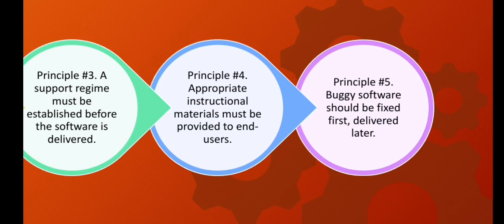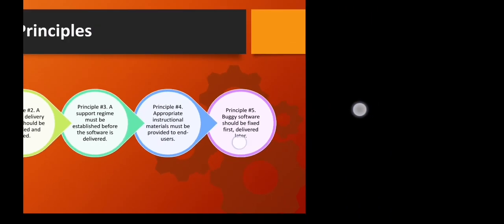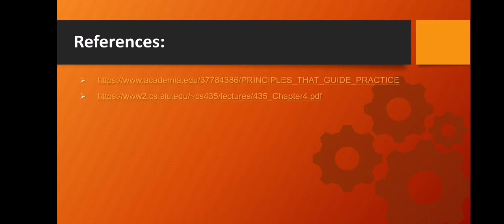Principle four: appropriate instructional materials must be provided to end users — this means troubleshooting guidelines, differences documentation, and so on. Principle five: buggy software should be fixed first, delivered later. Do not send software with bugs and say they will be fixed in the next release, because they never get fixed. That concludes this topic — thanks for watching.